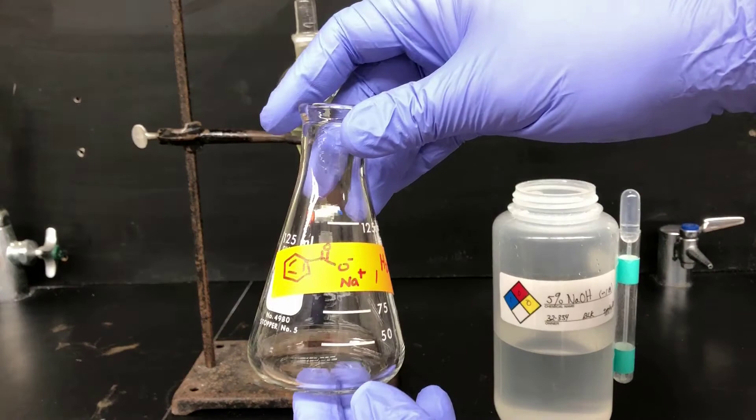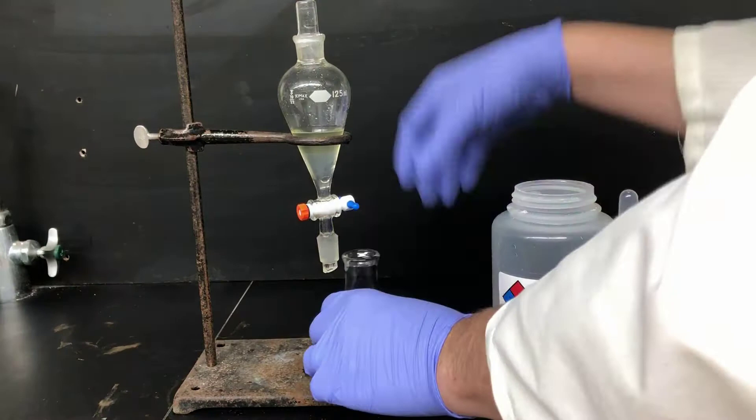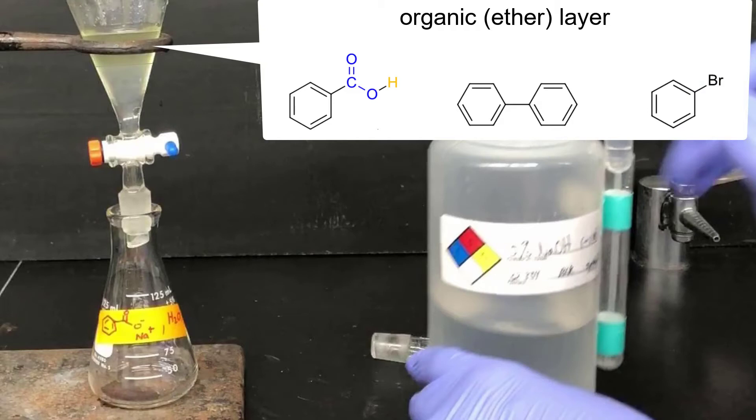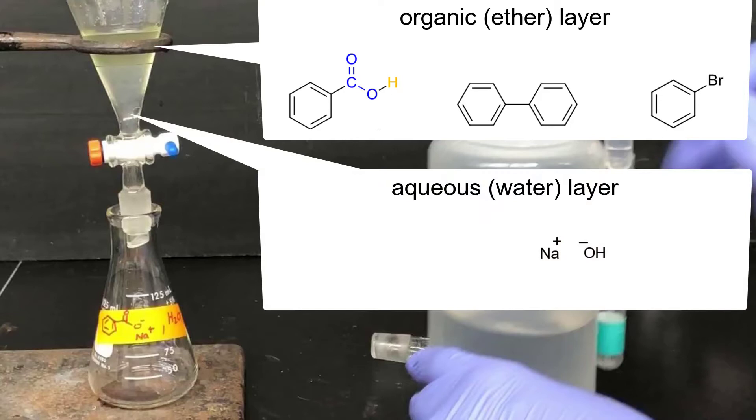Then, when I separate the layers, I'll separate the compounds. Benzoic acid used to be present in the organic layer, along with the biphenyl and the bromobenzene. However, when we put the aqueous solution of sodium hydroxide in, it got deprotonated, which made it into a much more polar salt, so it migrates into the water layer. Now the salt of the product has separated from the organic impurities.